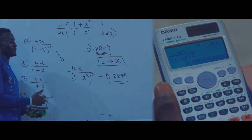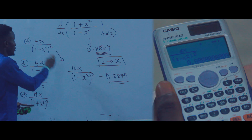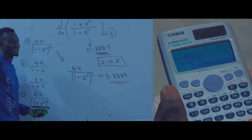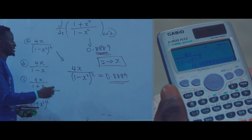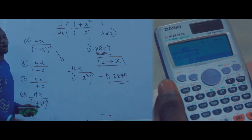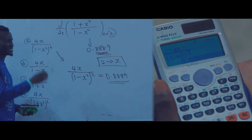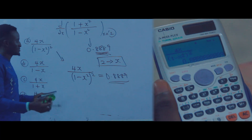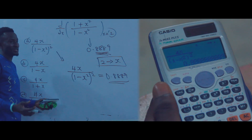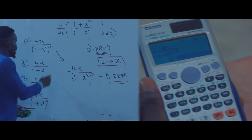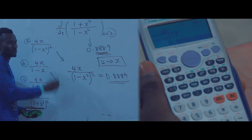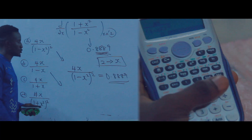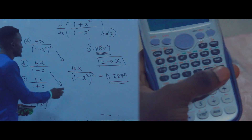I've already confirmed the answer is option A, which is 4x over (1 minus x squared) squared. Some of you may still doubt this, so let me also test option B.